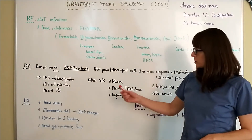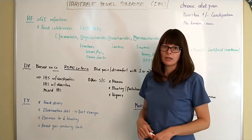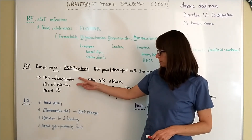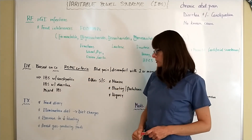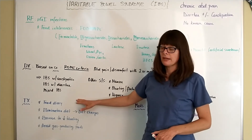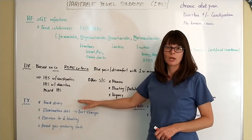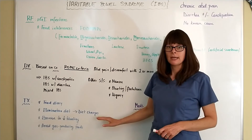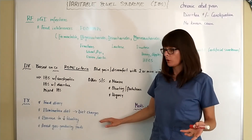Once the patient's symptoms are established, they are typically diagnosed with IBS with constipation or IBS with diarrhea, depending on which is predominant, or they can have mixed irritable bowel syndrome. Treatment starts with keeping a food diary to see if any of the FODMAPs are causing or worsening symptoms. Once identified, you can eliminate those from the diet and hopefully the symptoms will decrease or maybe resolve completely.